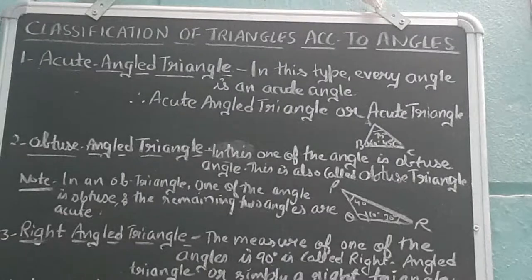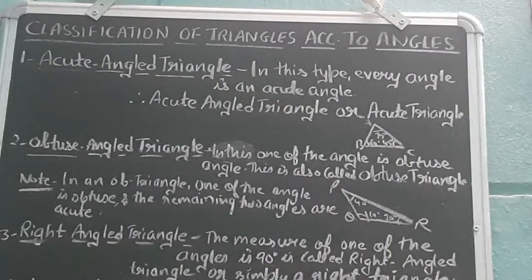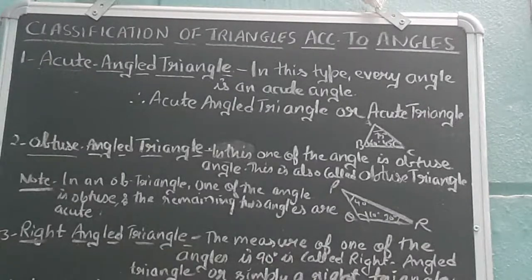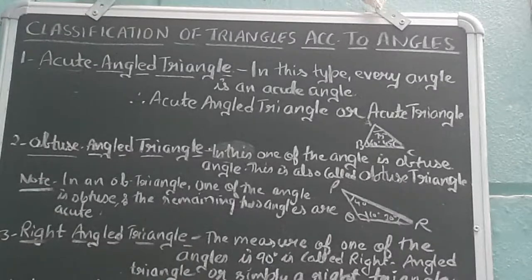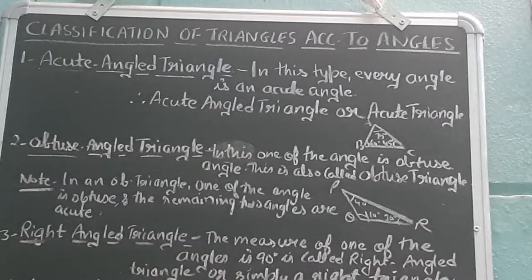First is the acute angle triangle. As it is clear from the name itself, in this type every angle is an acute angle. Acute angle means all those angles that are less than 90 degrees, and therefore it is also called an acute triangle. A figure is drawn — triangle ABC — in which angle A is 75 degrees, angle B is 60 degrees, and angle C is 45 degrees, meaning all three angles are acute.